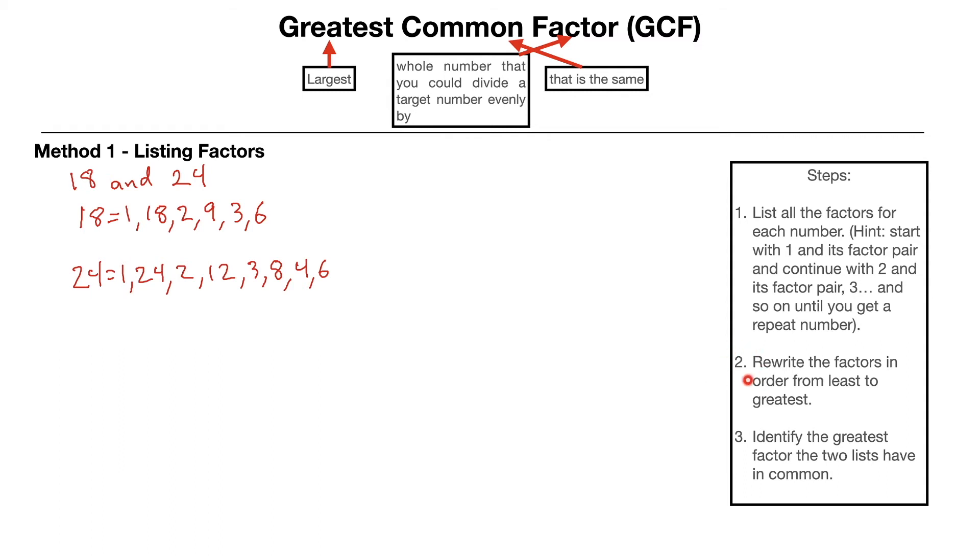We're going to move on to step number 2. Rewrite the factors in order from least to greatest. I'm going to recommend that, because that just helps us to make sure that we actually get the greatest common factor, especially if you have long lists of numbers. So I'm going to take the number 18, and I'm going to rewrite the factors in order from least to greatest. So I have 1, 2, 3. And I like to kind of cross them out as I go. 1, 2, and 3 are finished. Then, going back where we have 6, 9, and 18. I like to cross them out. That just means I've used every one.